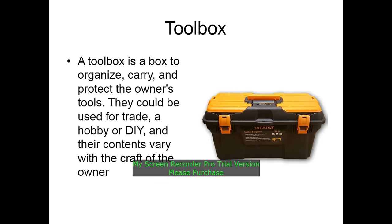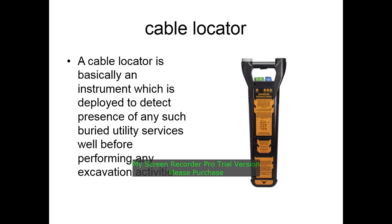A toolbox is a box used to organize, carry, and protect the owner's tools. It can be used for trade or a hobby, and its contents vary depending on the owner. A cable locator is basically an instrument deployed to detect the presence of any such varied utility service before performing any excavation activity.